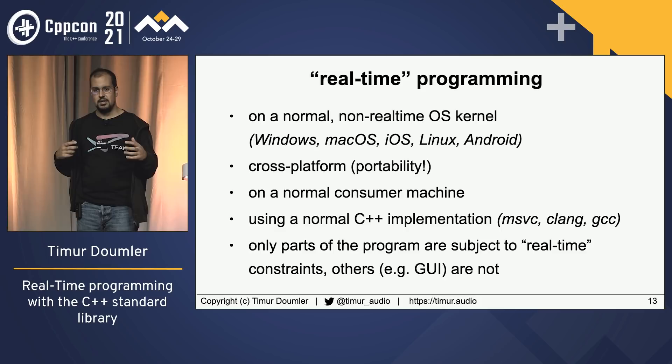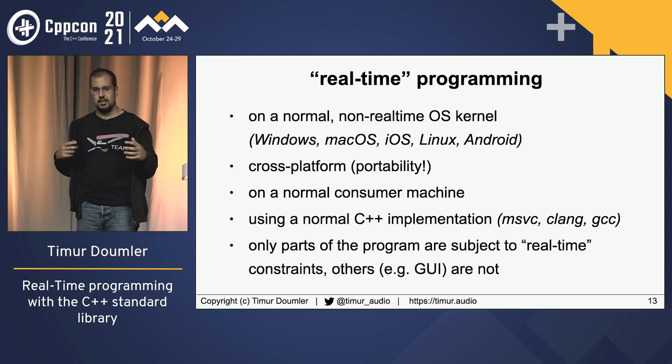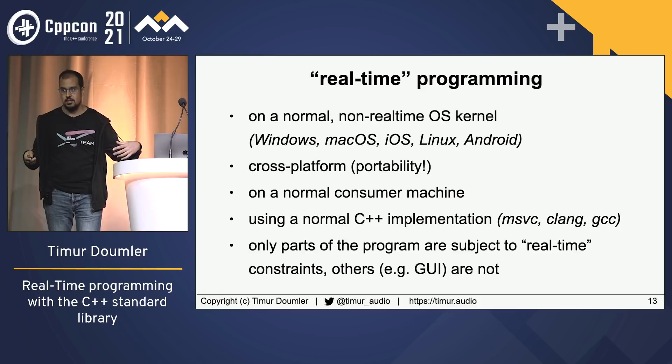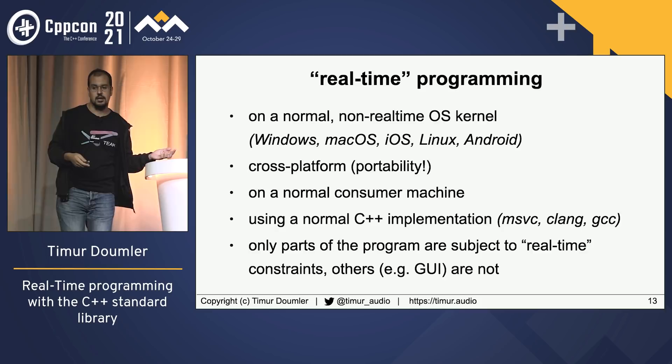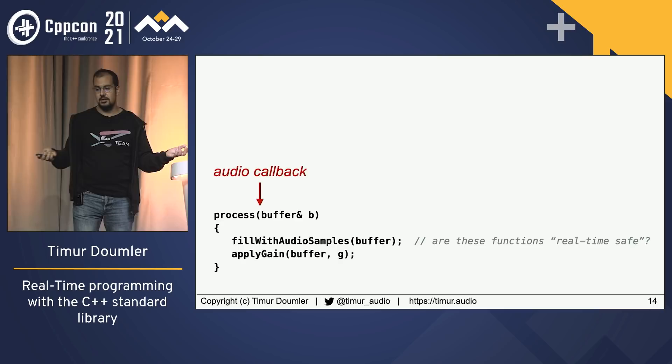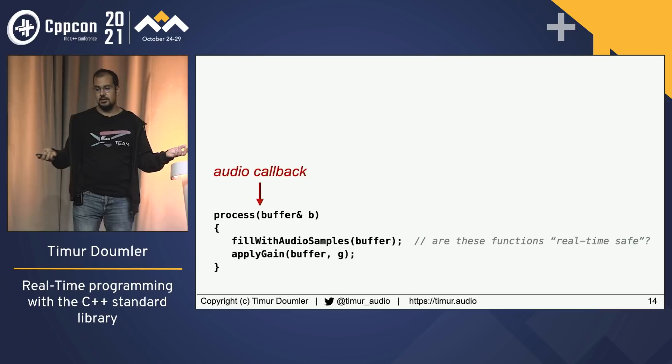Sometimes only parts of your program are subject to real-time constraints. For example, in audio software or a video game, you have one thread producing audio data with real-time constraints, but you also have a GUI, mouse input, network, and other things without those deadlines. You synchronize all of that. If you are on the high-priority real-time callback, you're going to do work there — produce some audio, apply some gain based on a volume knob.